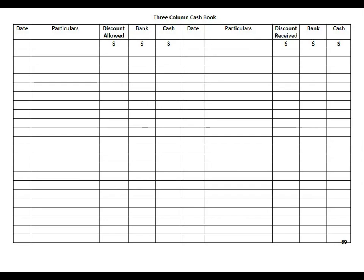A cash book is simultaneously a book of original entry and also a ledger account. All of the cash and bank transactions are firstly entered into the cash book, so it is a book of original entry. After being entered, we do not need to make a separate account for cash and bank because the cash book is also a T-account — a ledger account. So the cash book serves a dual purpose.